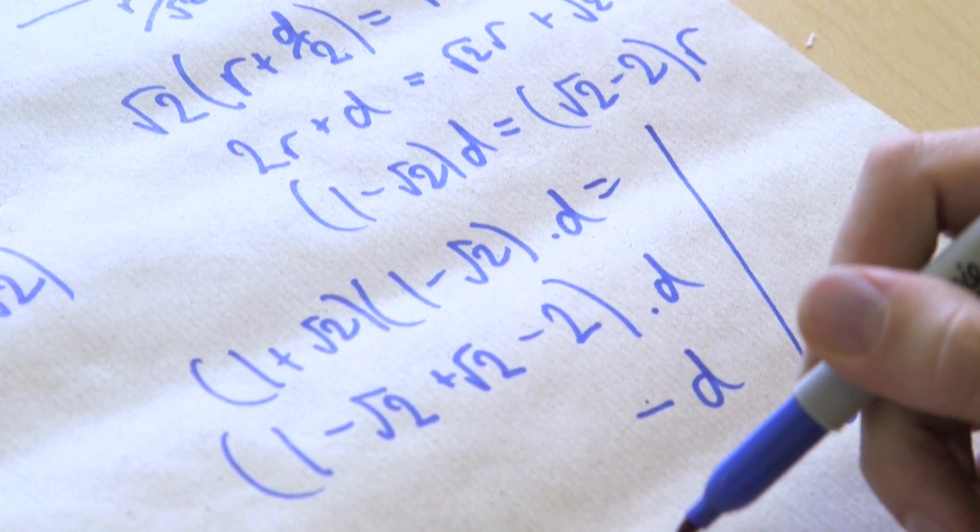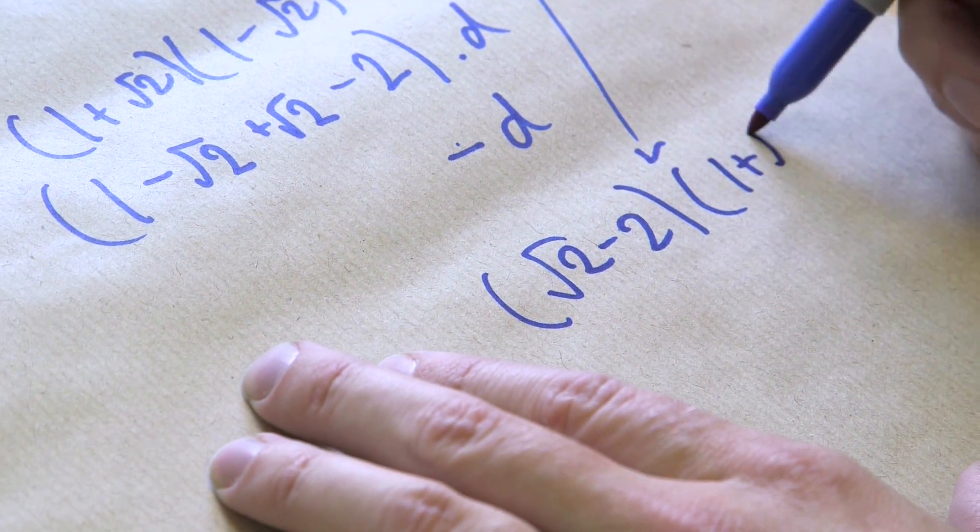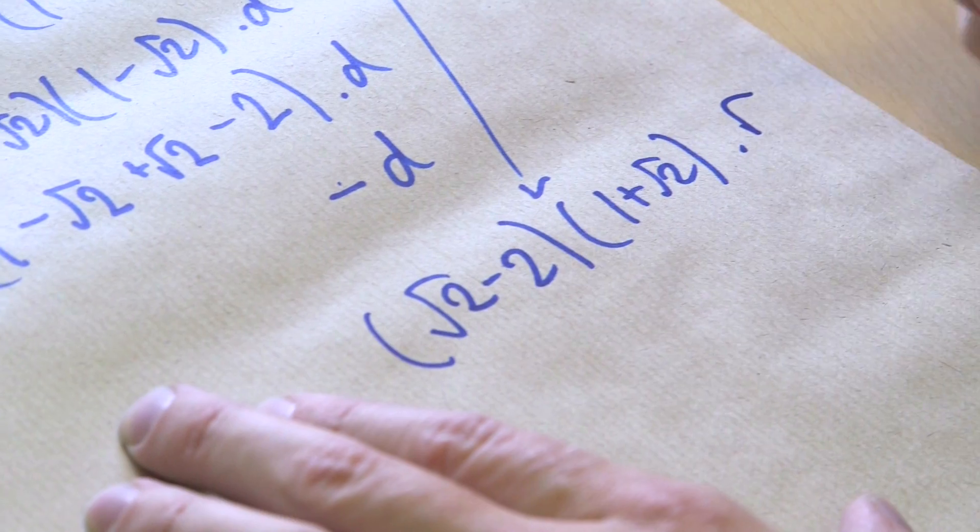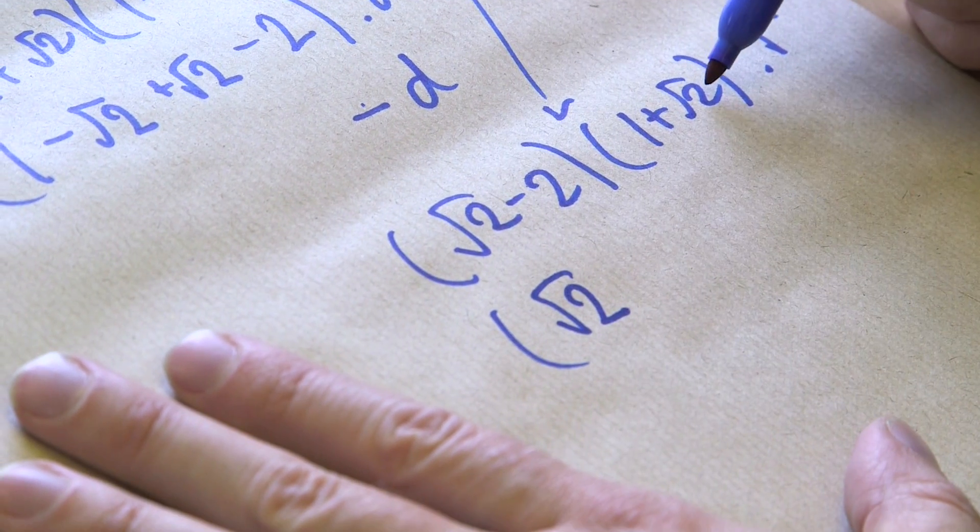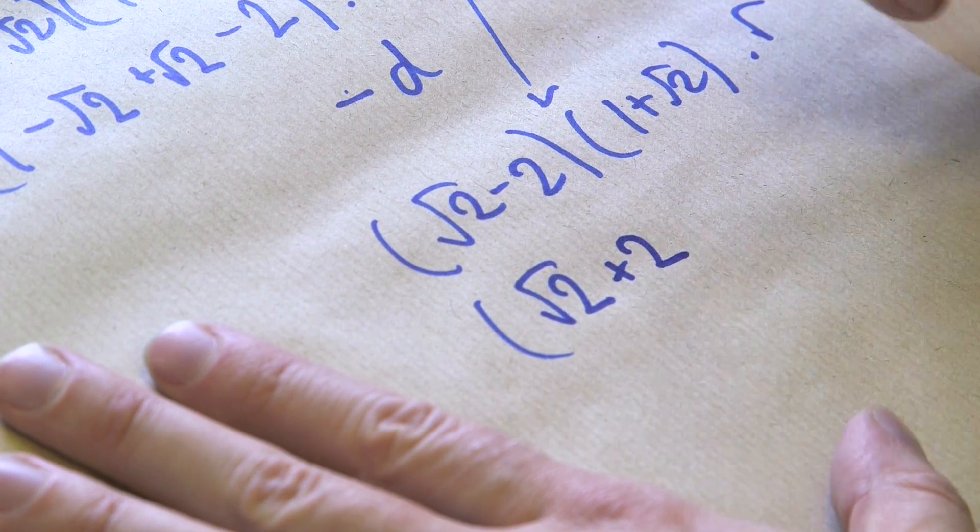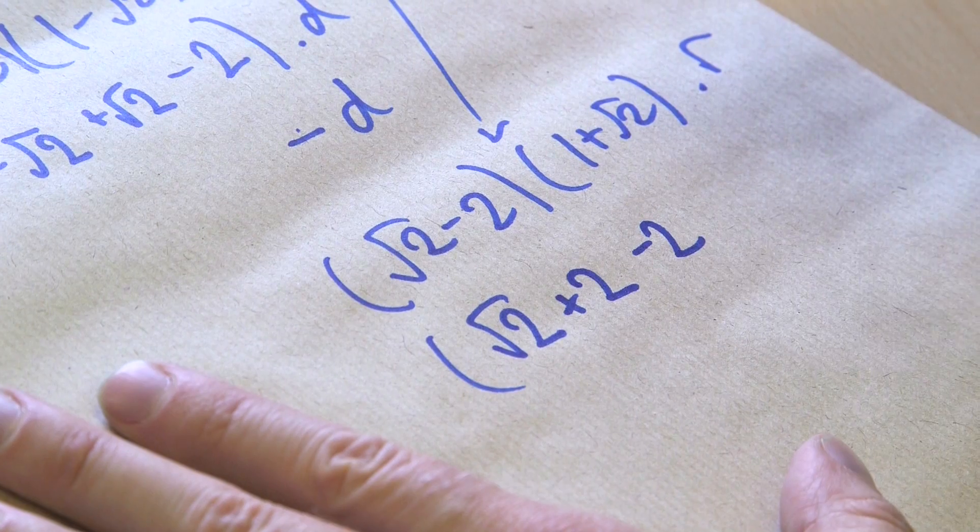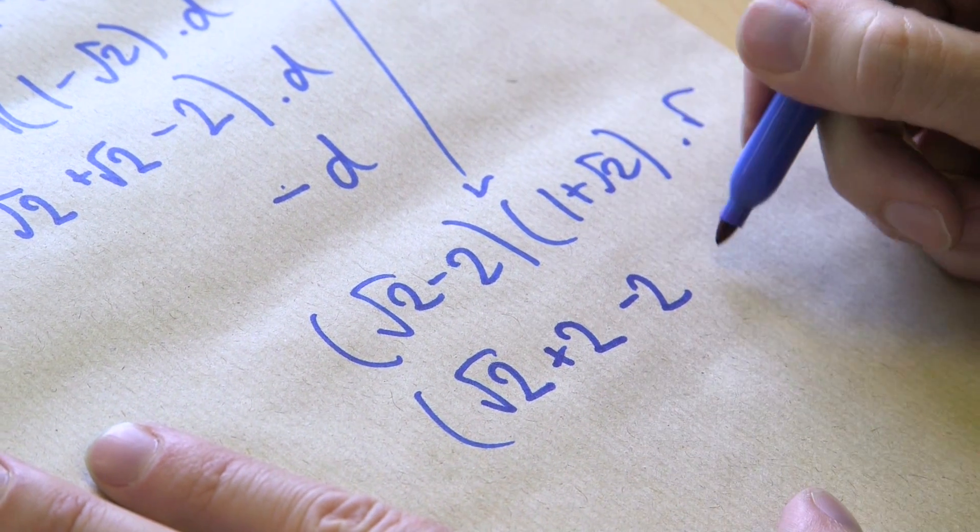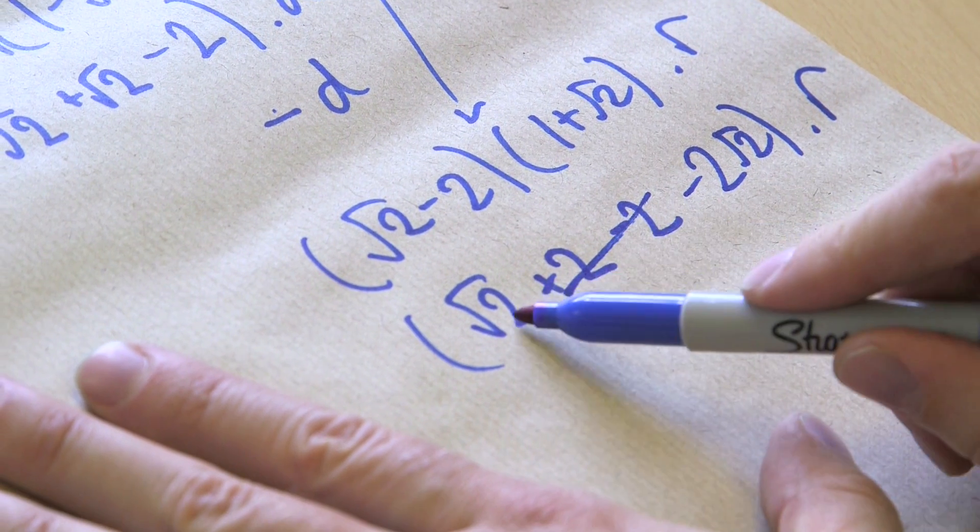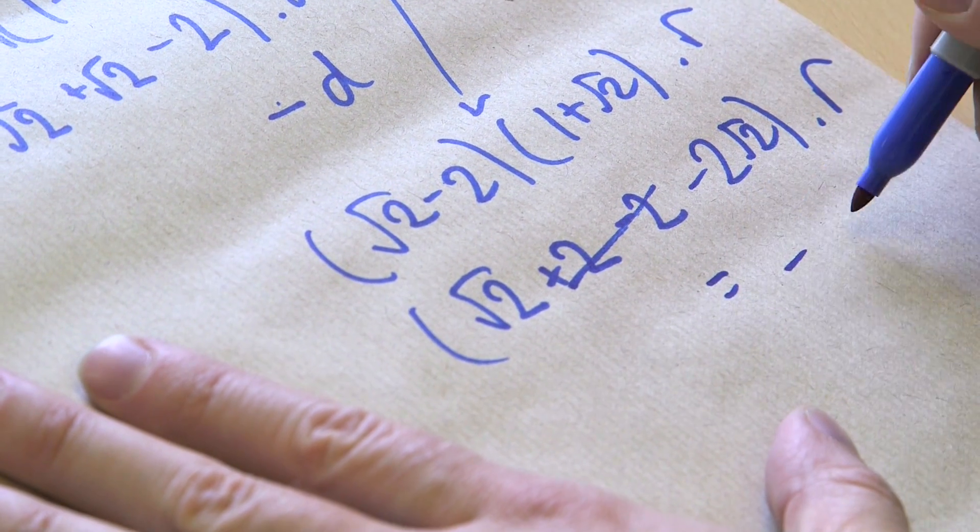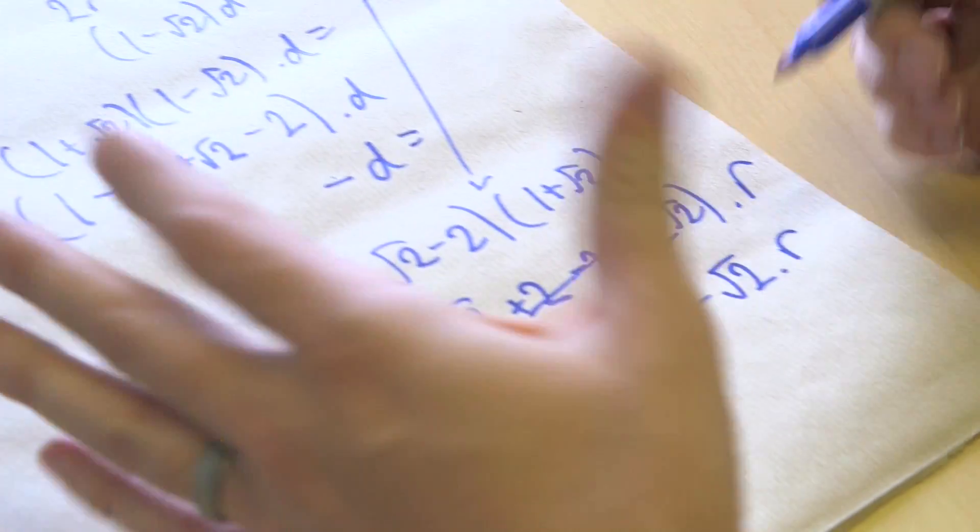And so we're going to multiply that by that as well, and we'll see what comes out. Root 2 minus 2 times 1 plus root 2 r up there, so we're going to put this in here. So that's root 2 times 1 gives us our root 2. Root 2 times plus root 2 is going to be plus 2. Negative 2 times 1 is going to be minus 2, so they've cancelled out, that's lovely. And then negative 2 times that is going to be subtract 2 lots of root 2 times r. So they cancel out, that's 1 minus 2 of those, that equals negative root 2 times r. And so that means that negative d equals that.